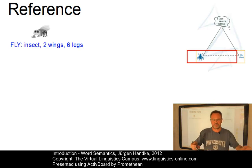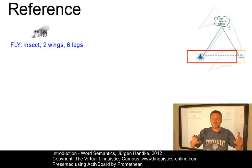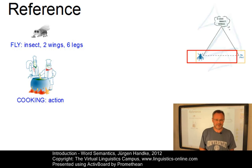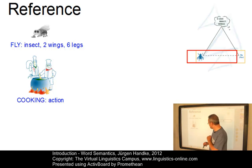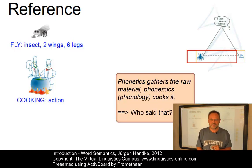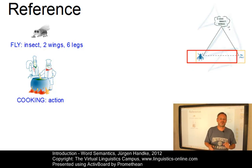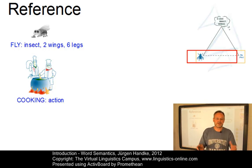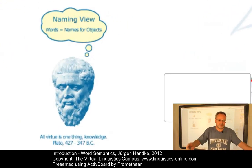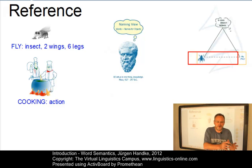For example, 'fly' can clearly be defined as an animate physical object — an insect with six legs and two wings. Or we refer to actions, such as cooking, which is clearly an action. The explanation of the relationship between lexemes and real-world objects is undoubtedly the task of semantics. One of the oldest views can be found in Plato's dialogue Kratylos — the so-called naming view. However, the definition of word-object or lexeme-object relationships via simple naming involves a number of problems.